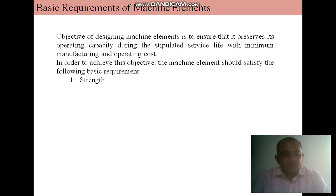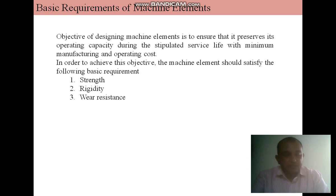The first criterion is strength. A machine part should not fail under the effect of forces acting on it, and it should have sufficient strength to avoid failure due to fracture or yielding. The second is rigidity — a machine component should be rigid so that it does not deflect or bend too much due to forces or moments acting on it, for example a vehicle shaft. Third is wear resistance — wear is the main reason for putting a machine part out of order. It reduces the useful life of the component and leads to loss of accuracy of machine tools. Types of wear include abrasive wear, scuffing, and pitting.